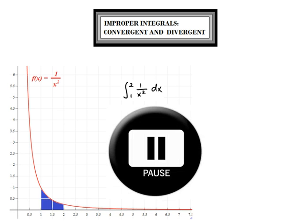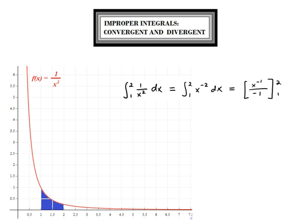Please pause the video at this time to solve this definite integral. These steps are fairly straightforward. One way to do this is to rewrite 1 over x squared as x to the negative second power. We apply the reverse power rule and the first fundamental theorem of calculus. We end up with 1 minus 1 half, so the area of the blue region is 1 half unit.